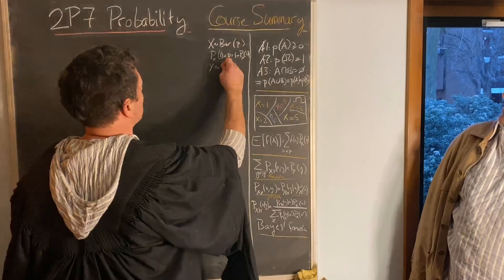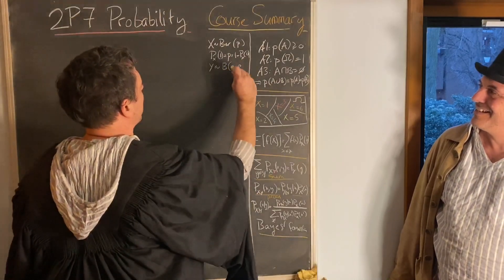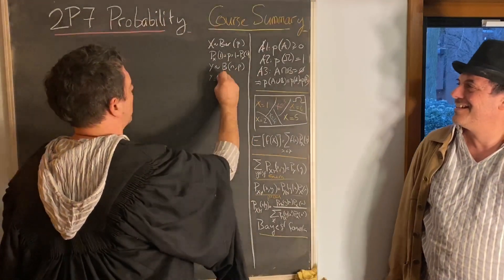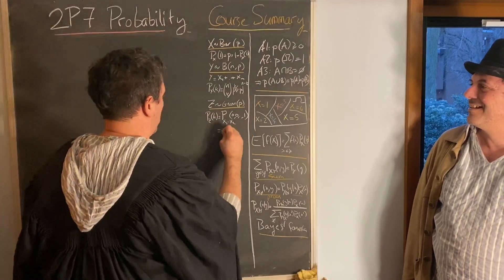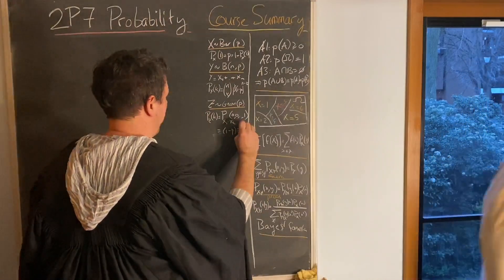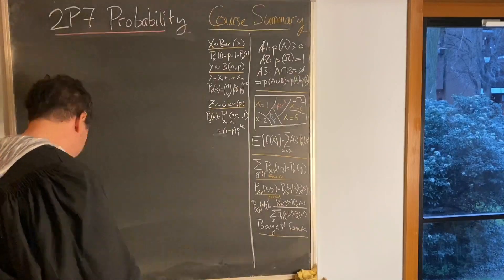Bernoulli likes to flip a coin, binomial wants to add them up, it's geometric till it's one.